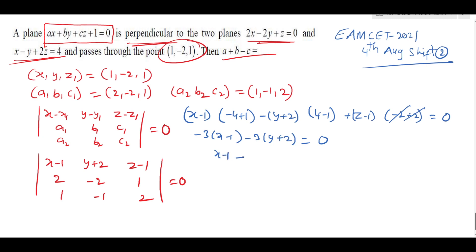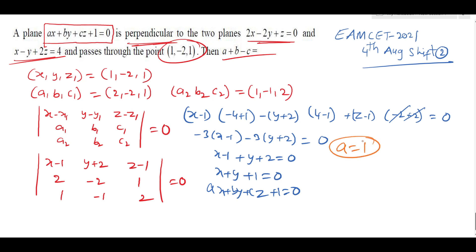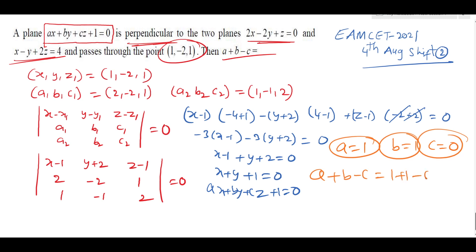Simplifying: minus 3(x minus 1) minus 3(y plus 2) + 0 = 0, which gives x minus 1 plus y plus 2 = 0, so x + y + 1 = 0. Comparing with ax + by + cz + 1 = 0, we get a = 1, b = 1, c = 0. Therefore a + b minus c = 1 + 1 minus 0 = 2.